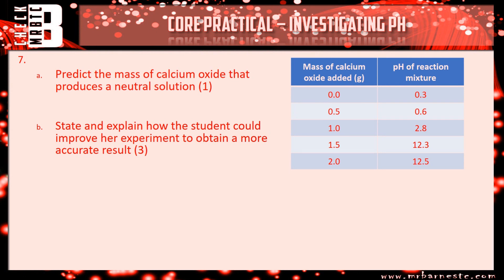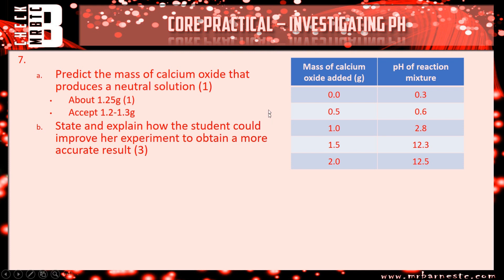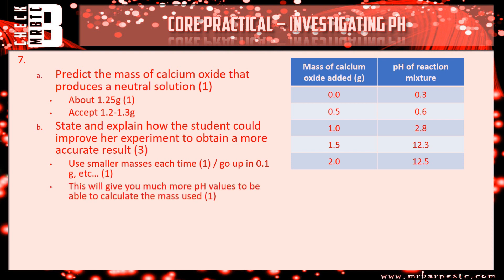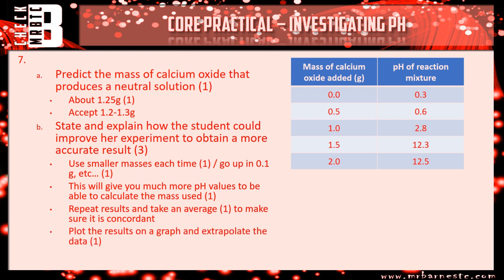So for 7A: looking at the table, 1 gram gives a pH of 2.8 and 1.5 grams gives 12.3, so it's going to be in between the two — approximately halfway, so 1.25 grams. You'd get a mark for anything between 1.2 and 1.3 grams. For 7B: to improve, you could use smaller masses each time — going up in 0.1 gram increments — because that will give you more pH values to calculate the mass more accurately. You could also repeat results and take an average, making sure results are concordant. Finally, you could plot the results on a graph and extrapolate the data to find exactly where the neutral point would be.